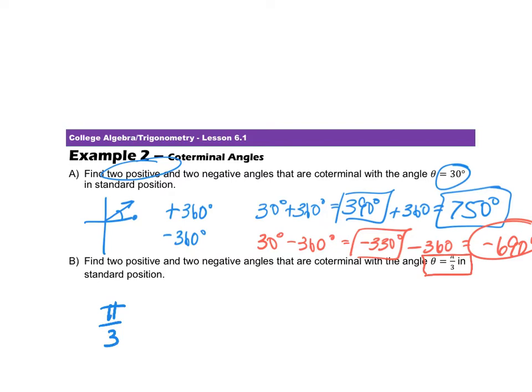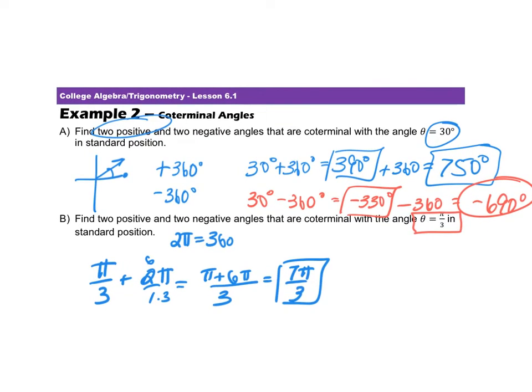So if I have pi over 3, I know that 2 pi is the same as 360 degrees. So I'm going to add 2 pi, which is over 1. I have to get a common denominator of 3. So I have pi over 3. If I change this to 3, this becomes 6, plus 6 pi over 3. A positive coterminal angle to pi over 3 would be 7 pi over 3. Now, if I'm going to find another positive coterminal, I'm going to add another 2 pi. So we're going to do the same thing, common denominator of 3. So if I have 7 pi plus, if I change this to 3, this becomes 6. So 7 pi plus 6 pi over 3. So another positive coterminal would be 13 pi over 3.